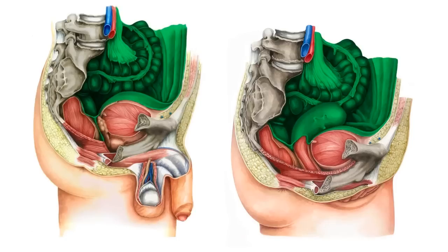We can see on both images that the peritoneum of both the male and female peritoneal cavity is reflected from the anterior wall of the pelvic cavity onto the surface of the urinary bladder. Over here and here we have the peritoneum reflecting back, although note that we also have the uterus in the female image.